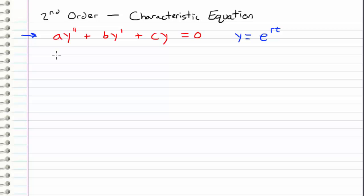So r came out to be negative b plus or minus the square root of b squared minus 4ac all over 2 times a. So this gives us r1 and it gives us r2.